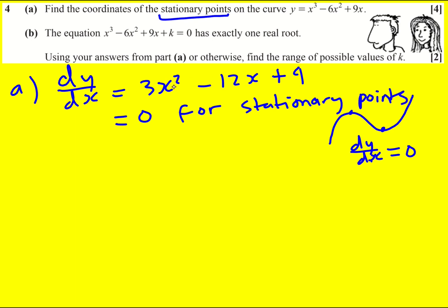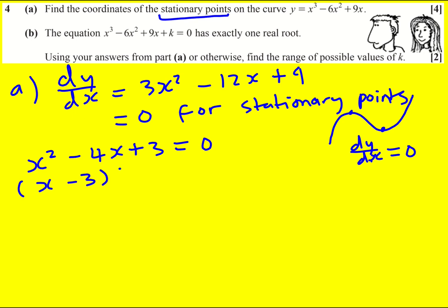I can actually divide through by a common factor of 3, so that gives me x squared minus 4x plus 3 equals zero, and this factorizes really nicely: (x minus 3)(x minus 1) equals zero, so x equals 1 or x equals 3.